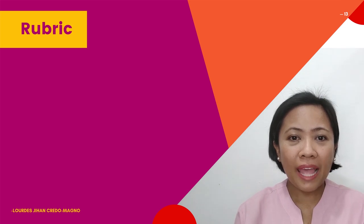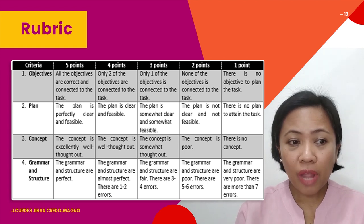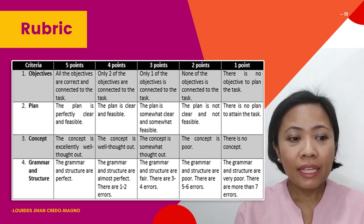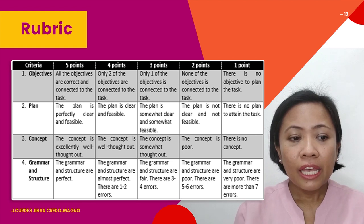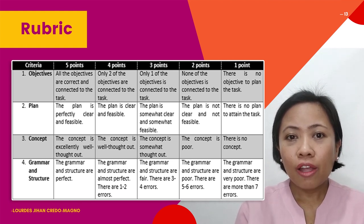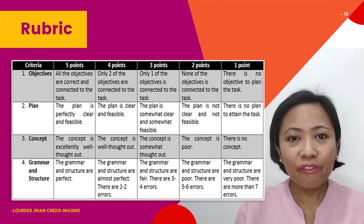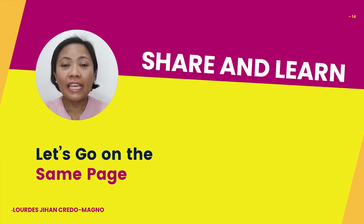Here's the rubric for your plan. You will get 5 points in objectives if all objectives are correct and connected to the task. You will get 5 points in plan if your plan is perfectly clear and visible. You will get 5 points in concept if it is excellently well thought out. And if your grammar and structure are perfect, you will get another 5 points — for a total of 20 points. Each group is given 1 minute to share their plan to the class.